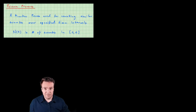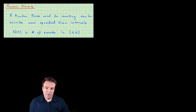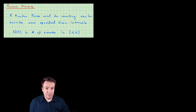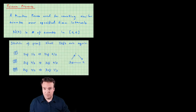Hey again everybody. Today we're going to introduce the Poisson process, a major player in the Markov processes world. We're going to use it a whole bunch in the next couple of applications, so it's worth spending some time and making sure we have a fairly solid understanding of it. We're going to give three different definitions, or at least seemingly different definitions, but they're all equivalent.